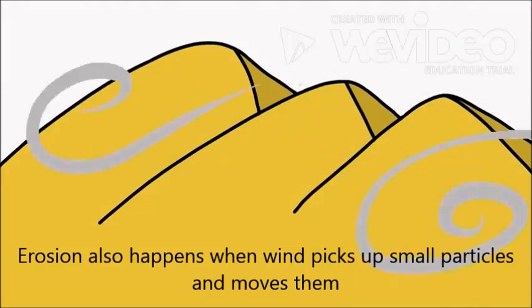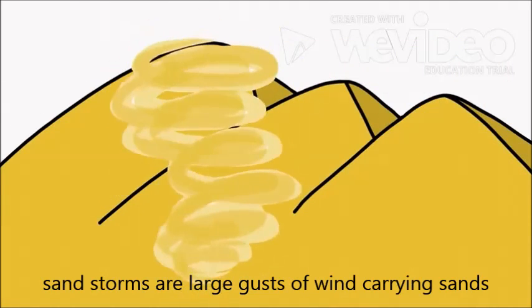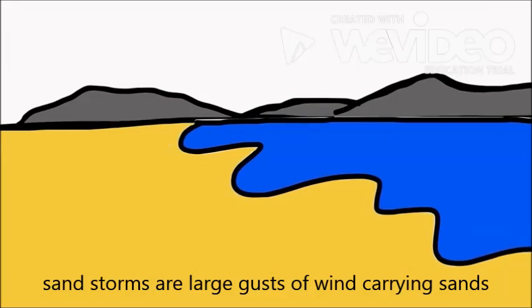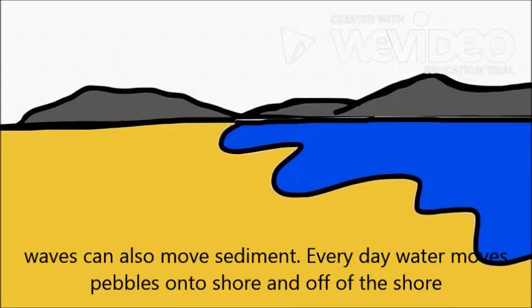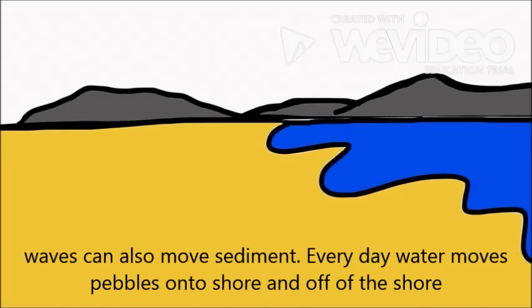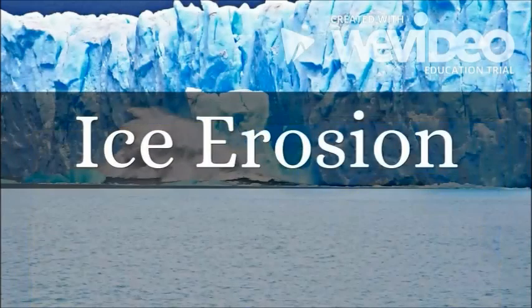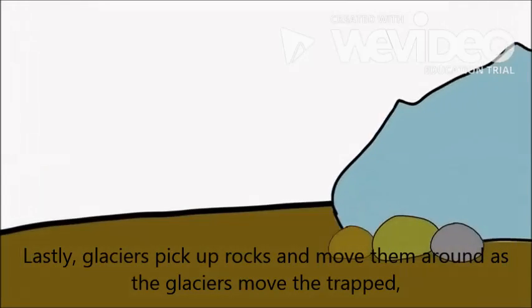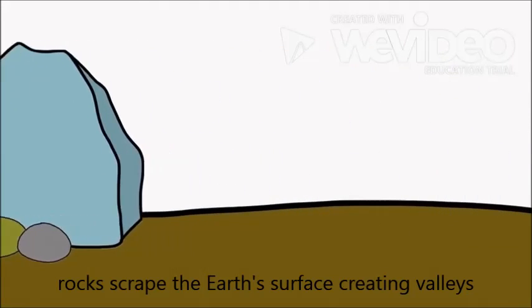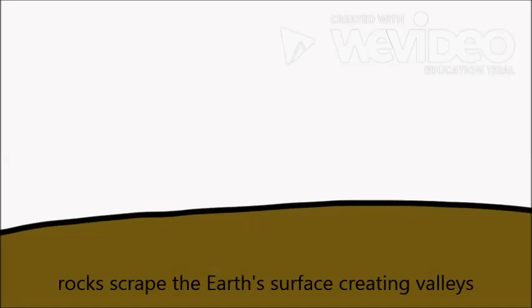Erosion also happens when wind picks up small particles and moves them. Sandstorms are large gusts of wind carrying sand. Waves can also move sediments. Every day, water moves pebbles onto shore and off of the shore. Lastly, glaciers pick up rocks and move them around. As the glaciers move, the trapped rocks scrape the earth's surface, creating valleys.